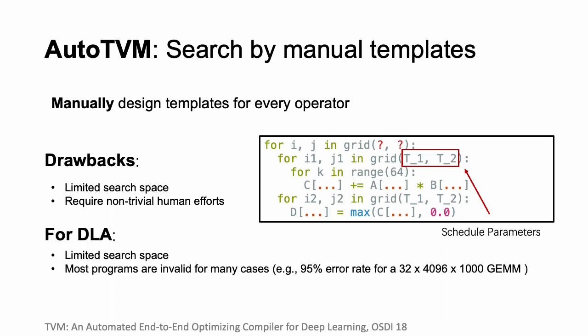When performing code generation for DLAs, the performance of resultant programs suffers from the limited search space. We also observe that most programs in the search spaces are invalid. For example, the error rate of a GEMM operator can be as high as 95%, which greatly harms the search efficiency.